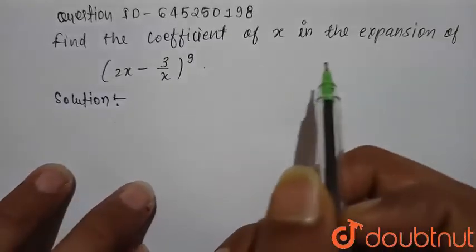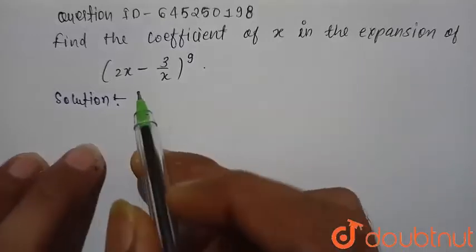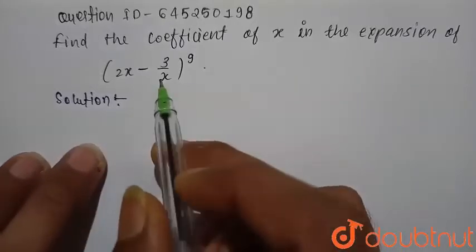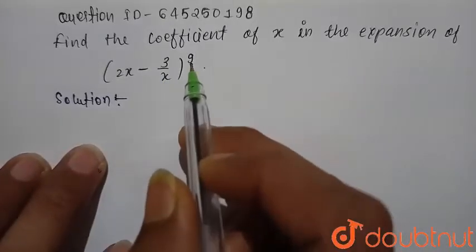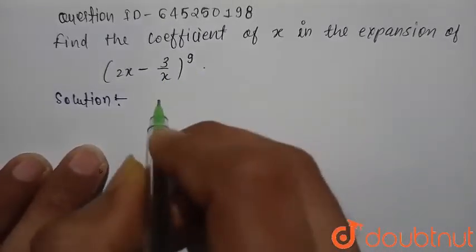Find the coefficient of x in the expansion of (2x minus 3) divided by x, whole raised to the power 9.